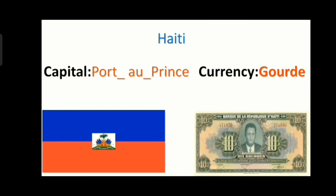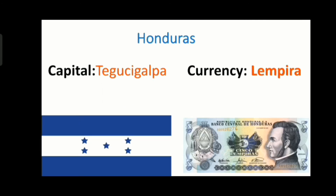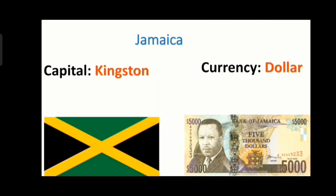The next country is Haiti and its capital is Port-au-Prince and its currency is Gourde. The next country is Honduras and its capital is Tegucigalpa and its currency is Lempira. The next country is Jamaica and its capital is Kingston and its currency is dollar.